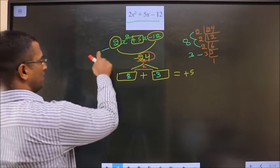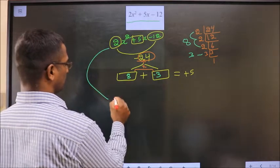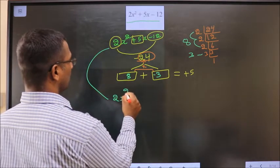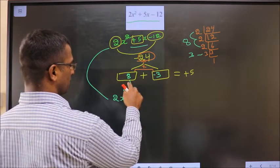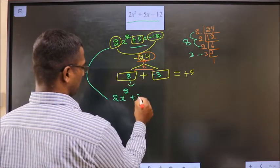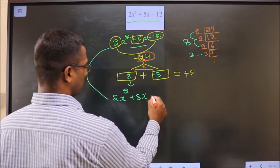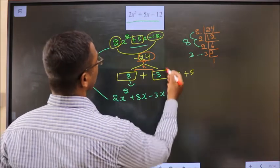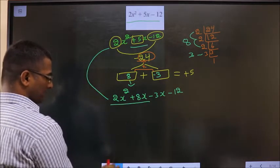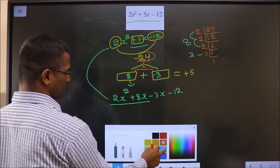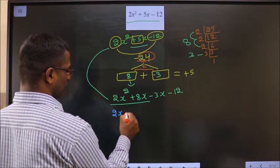Now, this will change to 2x square. Instead of 5x, what I will write now is this one: plus 8x and this one: minus 3x. And minus 12. Now, what can I take common from these two? 2x can be taken common.